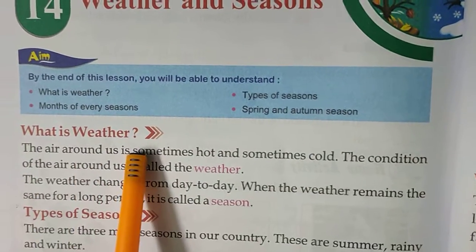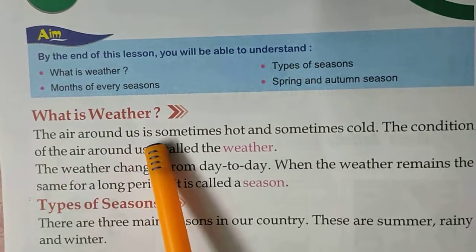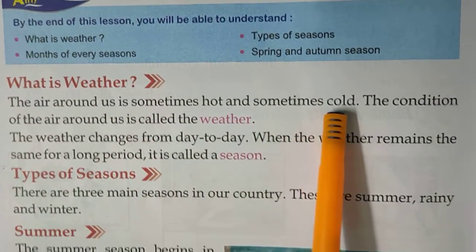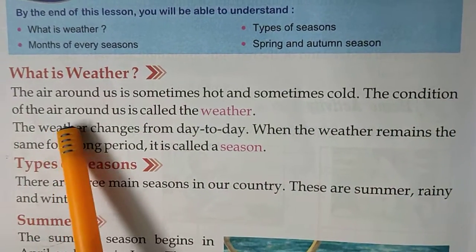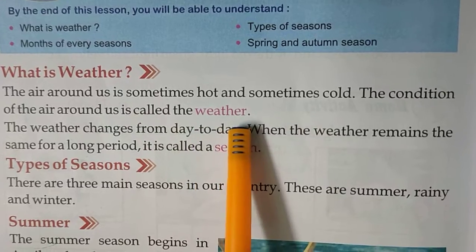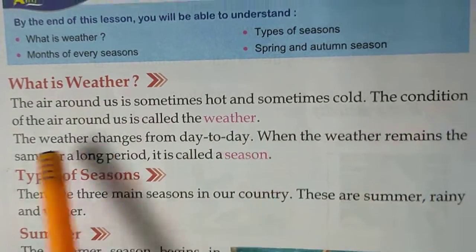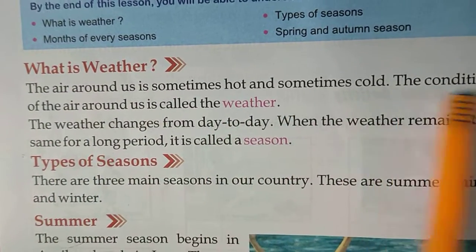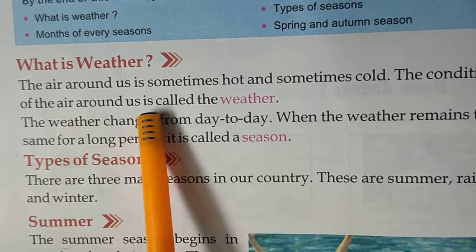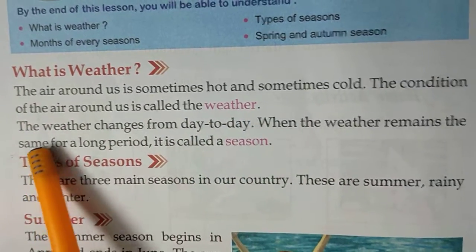What is weather? The air around us is sometimes hot and sometimes cold. The condition of the air around us is called weather. For MCQ, the question will be: 'The condition of the air around us is called ___.' The answer is weather.